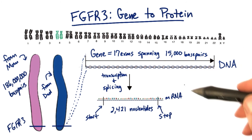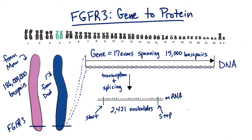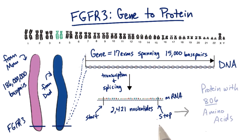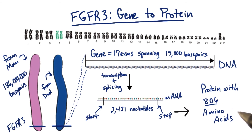After transcription and splicing, the resulting mRNA has 2,421 nucleotides of coding region. And after translation, we'll have a protein with 806 amino acids.